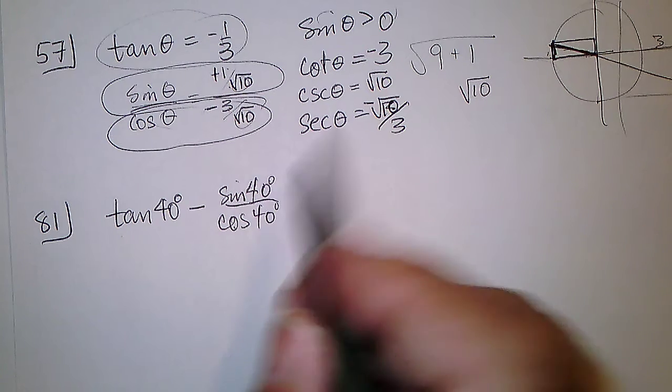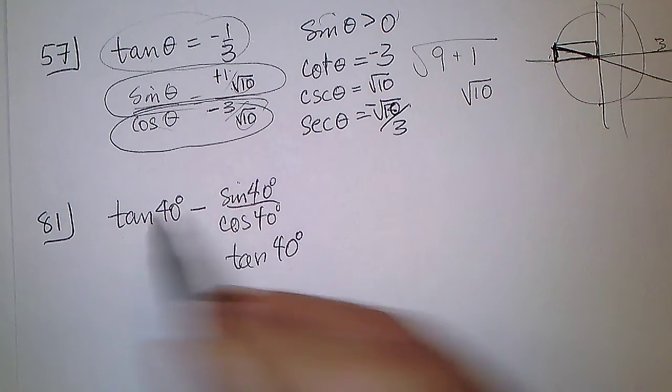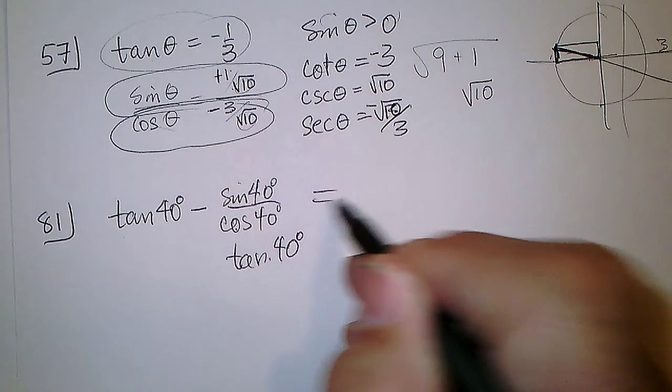Sine of 40 over cosine of 40, well, that's just another name for tangent of 40, so tangent of 40 minus tangent of 40 is 0.